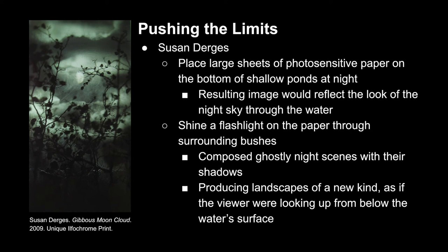Using large sheets of photosensitive paper, Susan Durges is able to take photos from the bottom of ponds by placing the paper in the bottom of a shallow body of water. If you look closely at this example, you can see the little ripples of the water's surface. In addition to taking her photos at night, she also experiments with artificial lighting, like shining a flashlight onto the paper through surrounding bushes, producing unique landscapes where the audience feels like they're looking up at the water's surface from below.